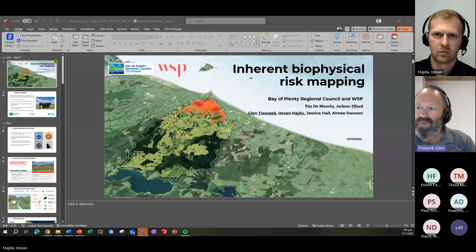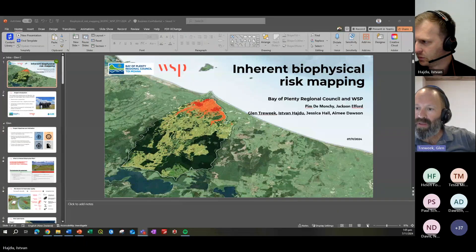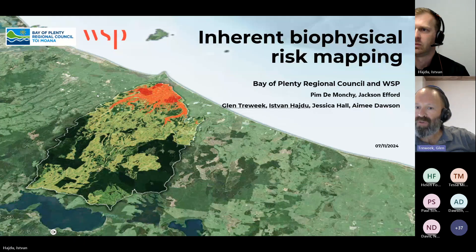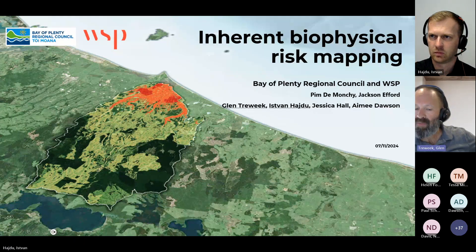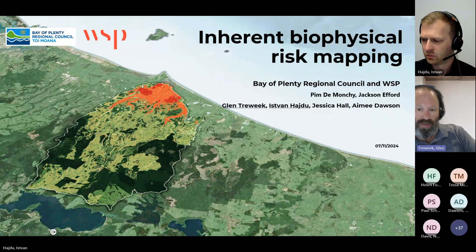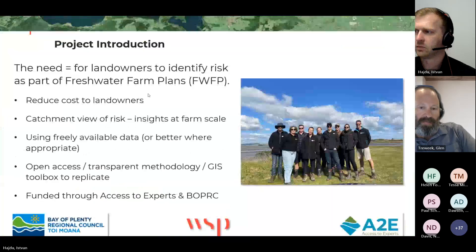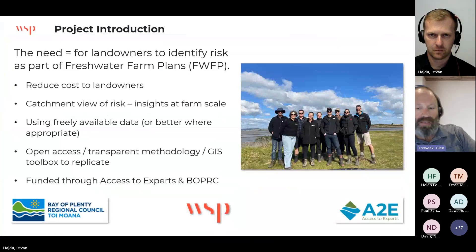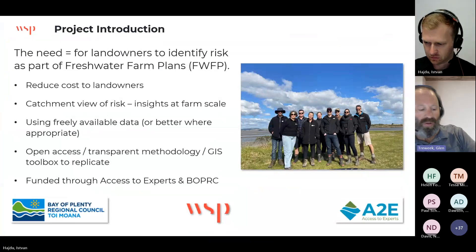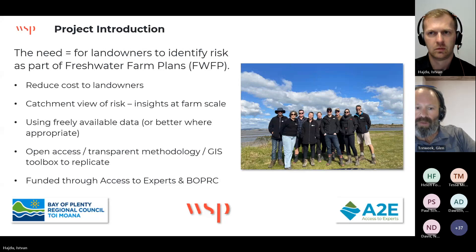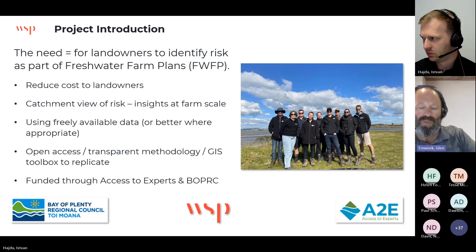Thanks Eliza. So as discussed, we partnered with the Bay of Plenty Regional Council to produce biophysical risk maps. Bay of Plenty had done some previous work trying to identify parts of their catchments where the risk of contaminants to waterways might be greatest, and they were looking for a tool that might reduce that cost to landowners when preparing farm environment plans and doing risk assessments.